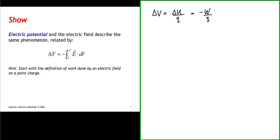So now we have a connection between electric potential and the work done. This will give us our connection to the electric field. The work done by a force in displacing an object between two points — from some initial point to some final point — is equal to the line integral of that force between those two points.